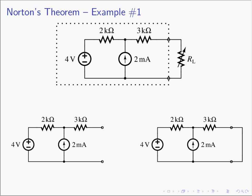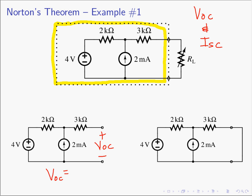Quickly, if we have the circuit inside a box and we're connecting a resistor R_L to the outside, we want to find an equivalent circuit to attach to R_L that produces the same behavior. To find the Norton equivalent, we need V_OC and I_SC. We remove R_L and find the open circuit voltage — V_OC ends up being 8 volts. Then we replace R_L with a short circuit and find I short circuit, which is 1.6 milliamps.